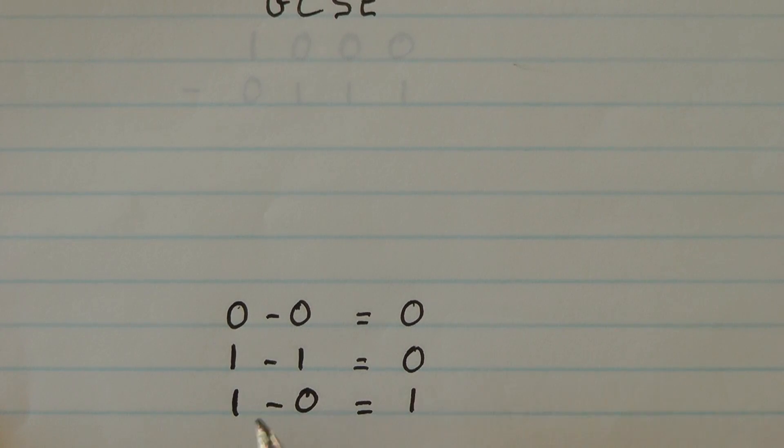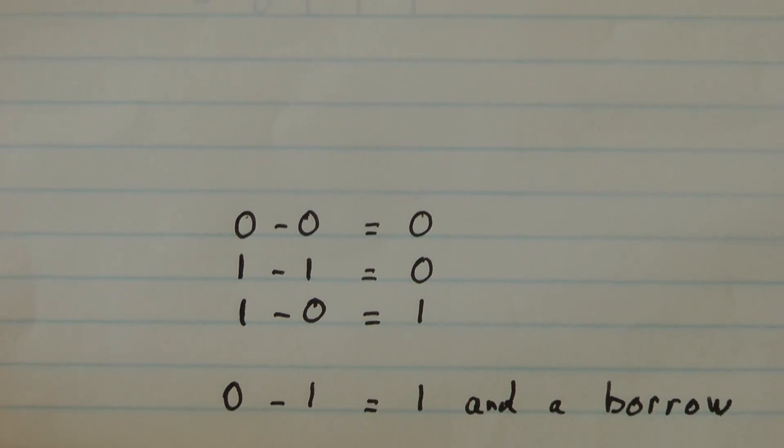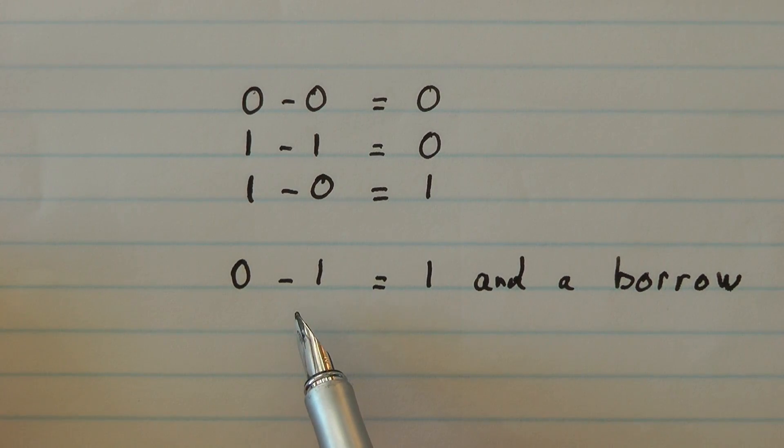0 minus 0 is 0, 1 minus 1 is 0, 1 minus 0 is 1. Then there's a fourth rule: 0 minus 1 is 1 and a borrow.